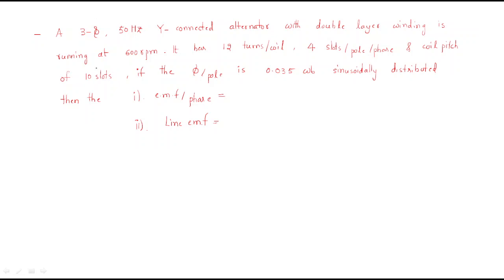Hello everyone. In this session we will continue the distribution factor, and discuss a problem about a three-phase 50 Hz star-connected alternator with double layer winding running at 600 rpm. It has 12 turns per coil, 4 slots per pole per phase, and a coil pitch of 10 slots. The flux per pole is 0.035 Weber, sinusoidally distributed.